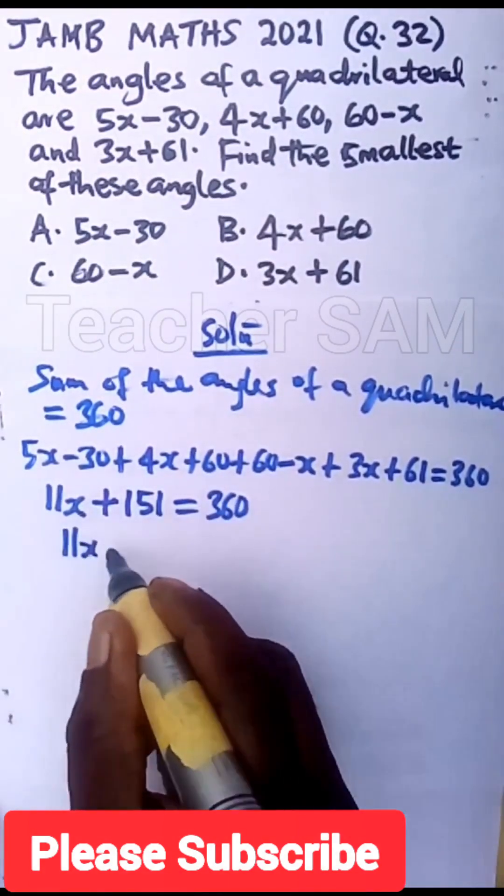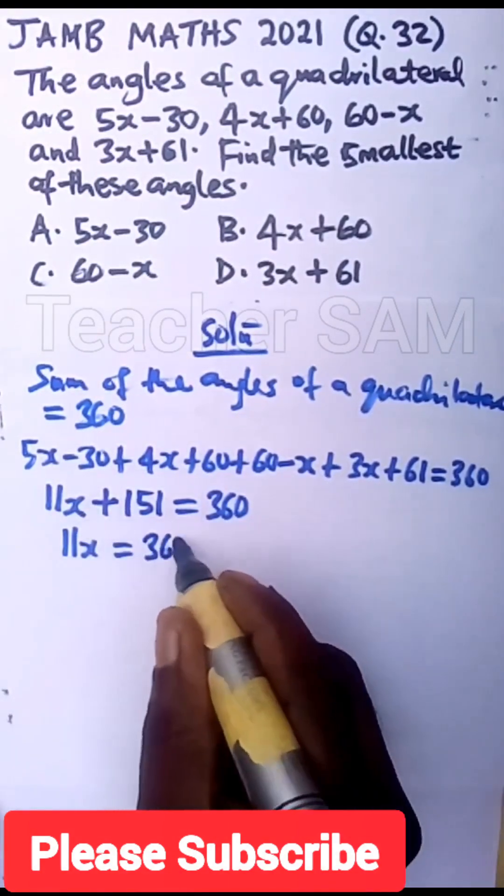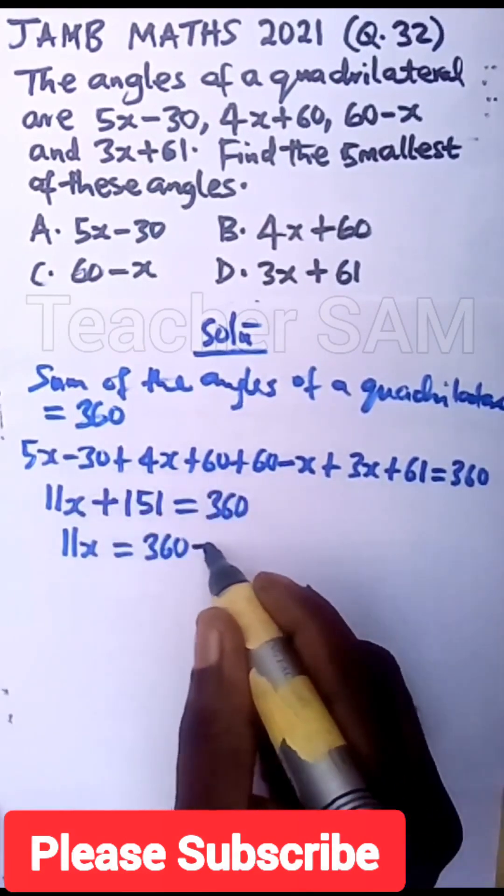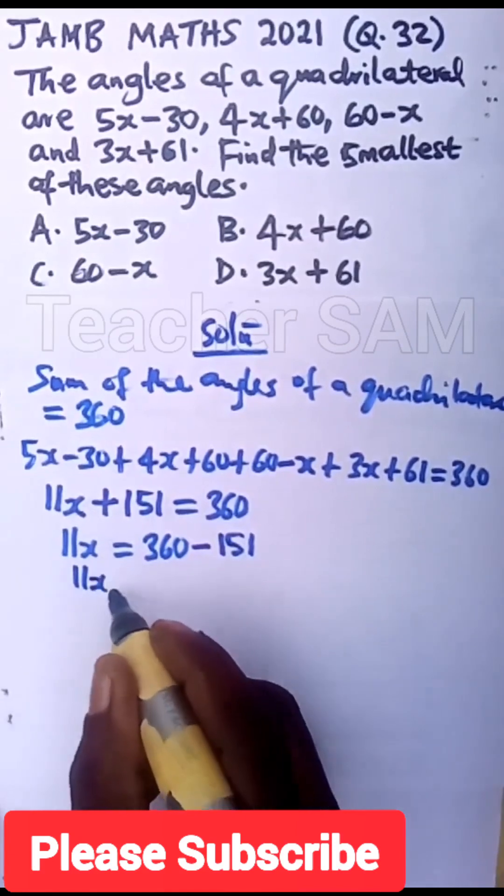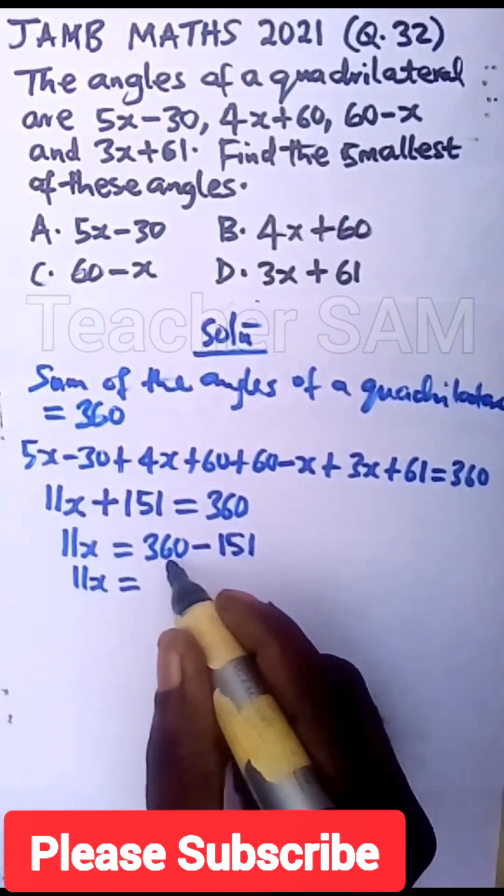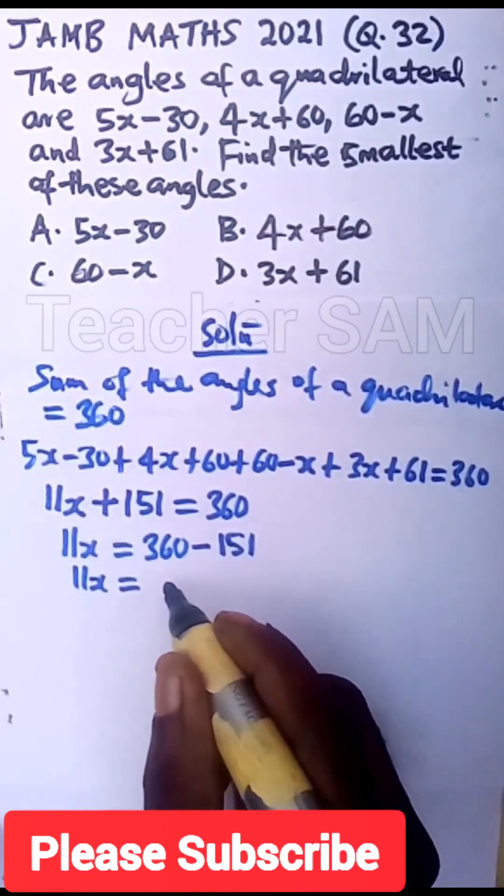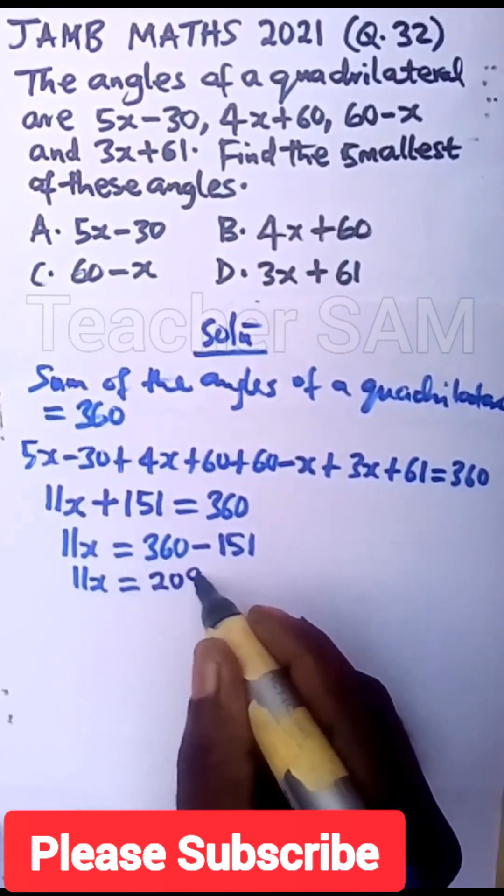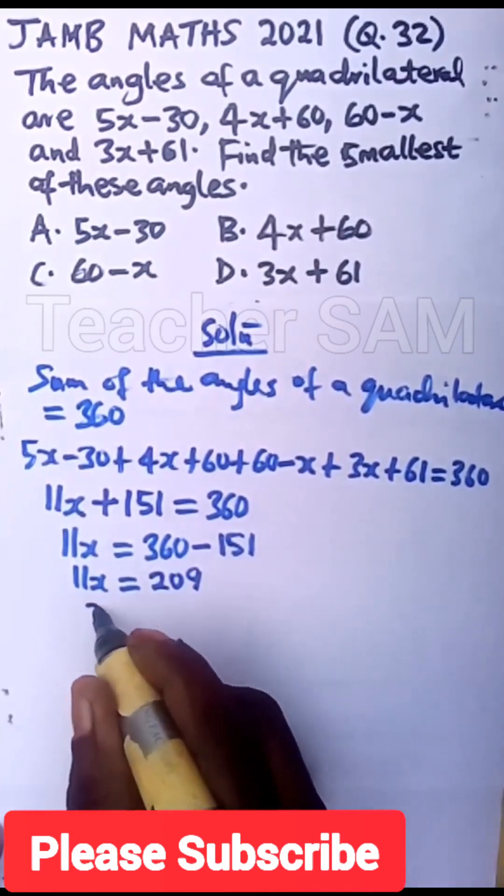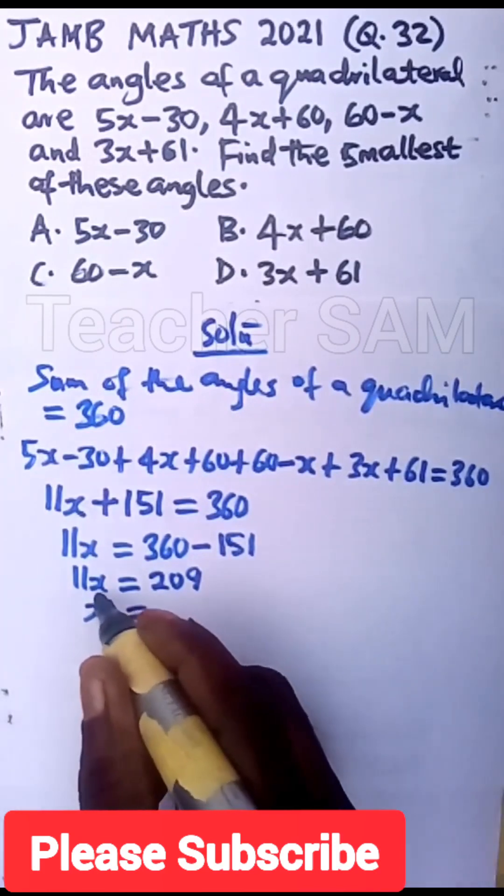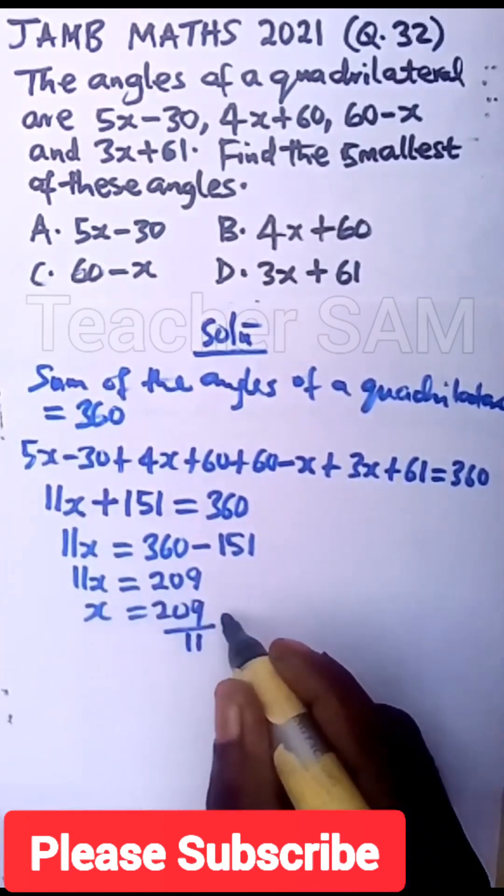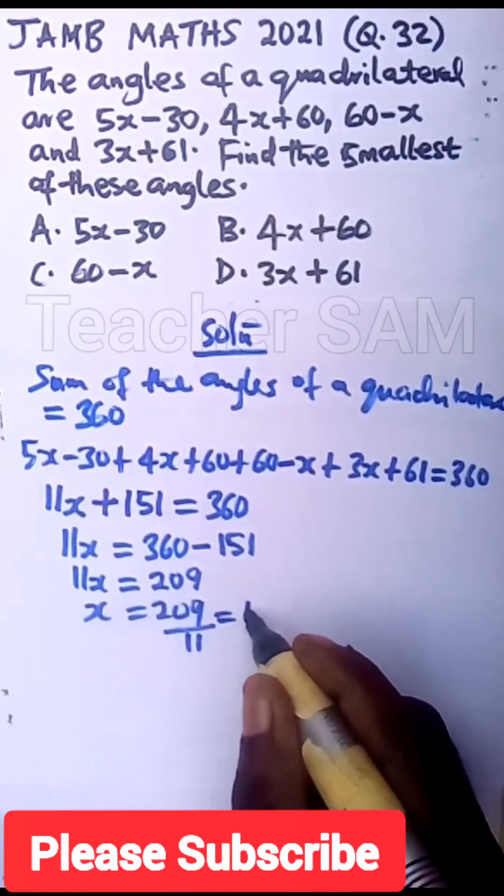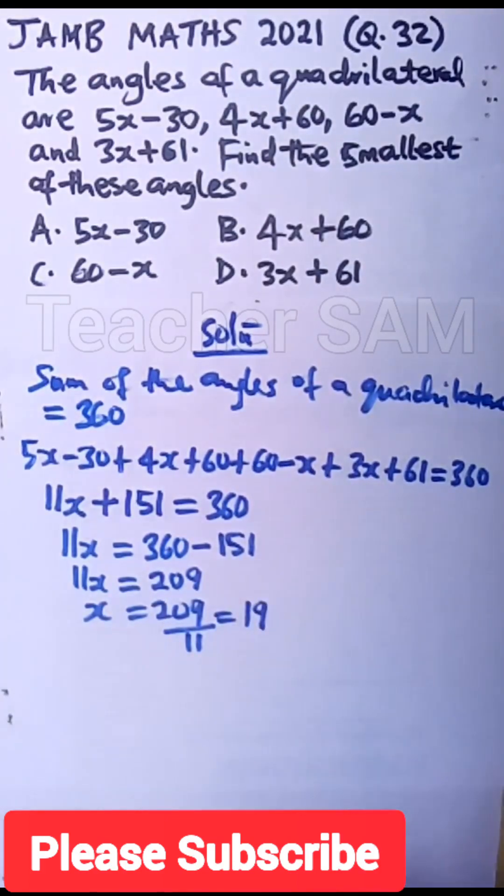Now our 11x will be equal to 360. Move this over, we have minus 151. Our 11x will be equal to 360 minus 151, you have 209. So our x will be equal to, divide both sides by 11, the coefficient of x. We have 209 divided by 11. So we have divided correctly, you have 19.